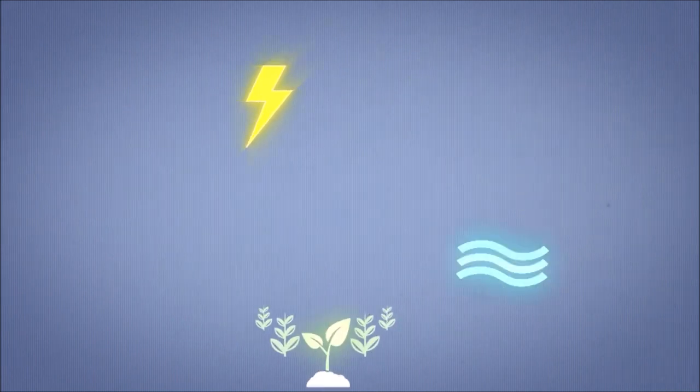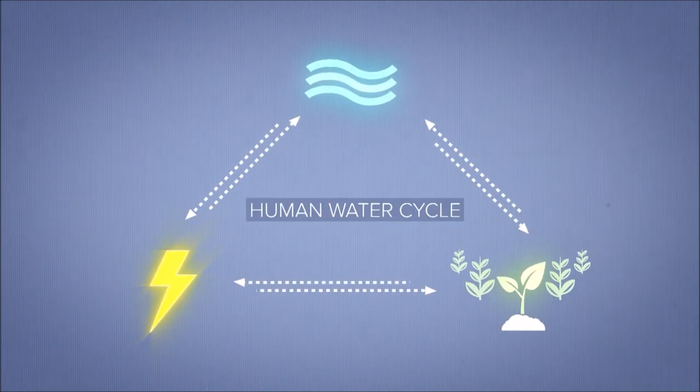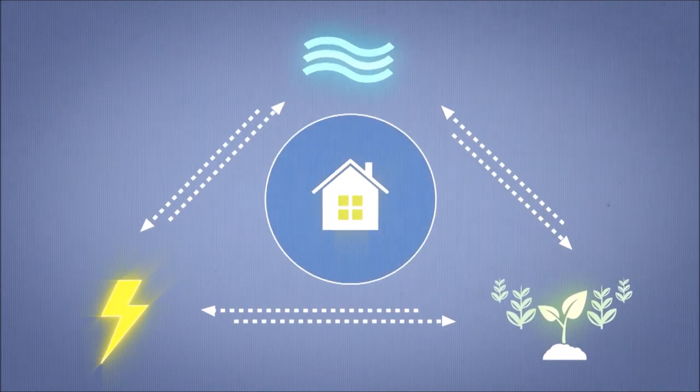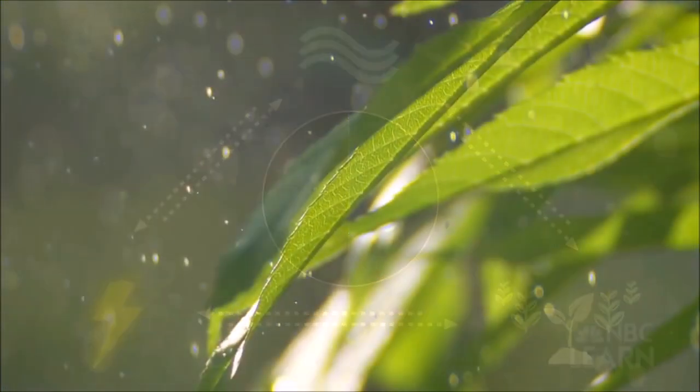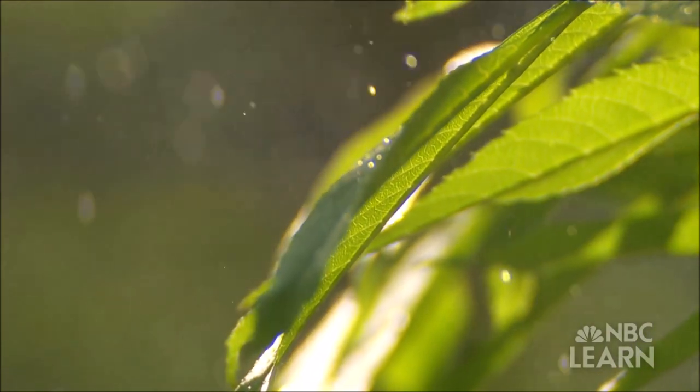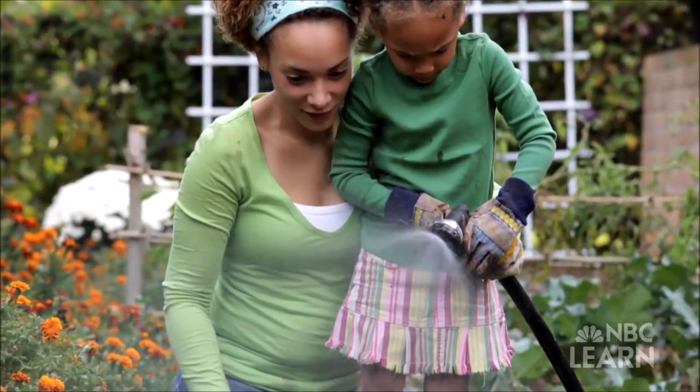But water is also constantly moving through another cycle, the human water cycle, which powers our homes, hydrates our bodies, irrigates our crops and processes our waste. The tight connection between water, food and energy also makes them dependent on one another.